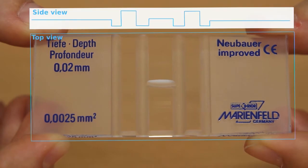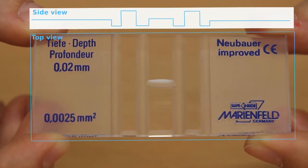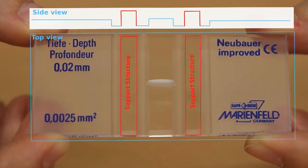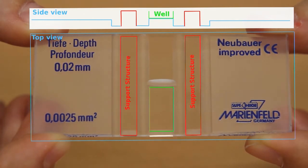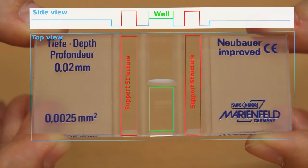A hemocytometer consists of a thick glass microscopy slide with two support structures in the middle. The area between those structures creates a well with a defined area. Additionally, lines are etched into the surface which further subdivide the area.